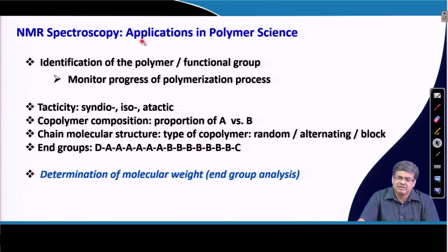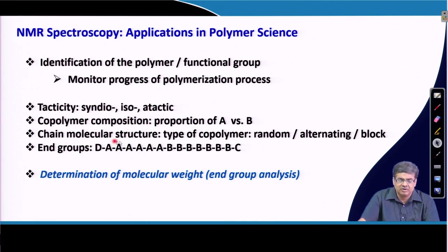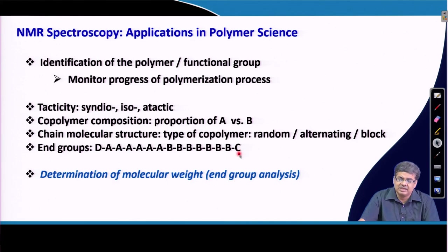NMR spectroscopy is used in great detail to identify the polymer and its functional groups, and can be used to monitor the progress of polymerization. It can be used to find out tacticity — whether the polymer is syndiotactic, isotactic, or atactic — and for determining copolymer composition, chain molecular structure (random, alternating, or block copolymer). It can also be used to find out end groups, and if those end groups have specific attributes, end-group analysis by NMR can determine the number-average molecular weight Mn.